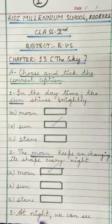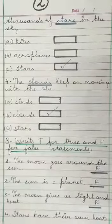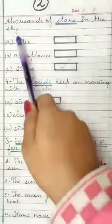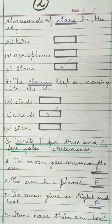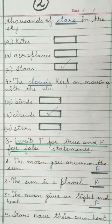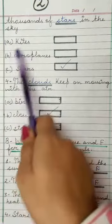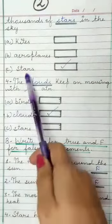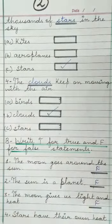Next question: at night, we can see thousands of dash in the sky. What can we see in the sky at night? Options are A. Kites, B. Aeroplanes, C. Stars. So the answer is Stars.